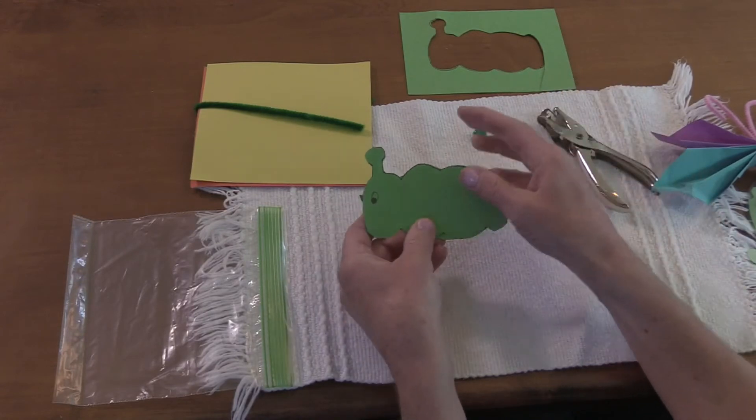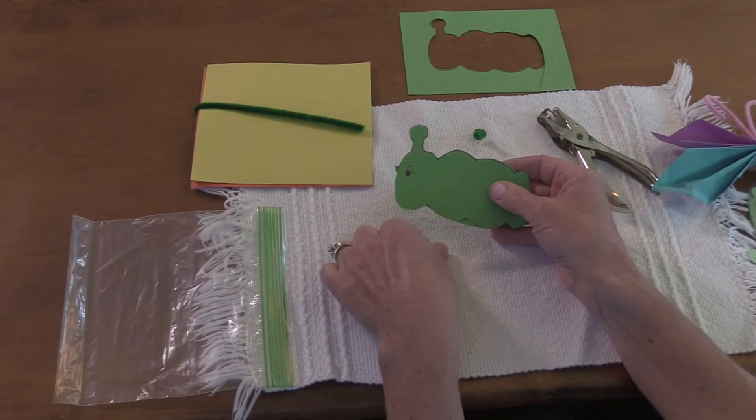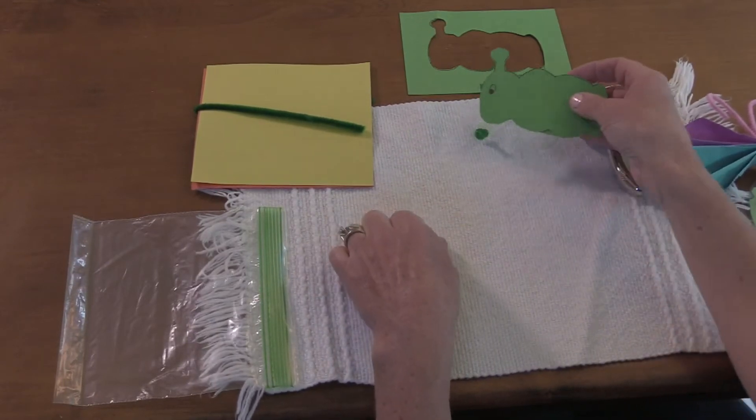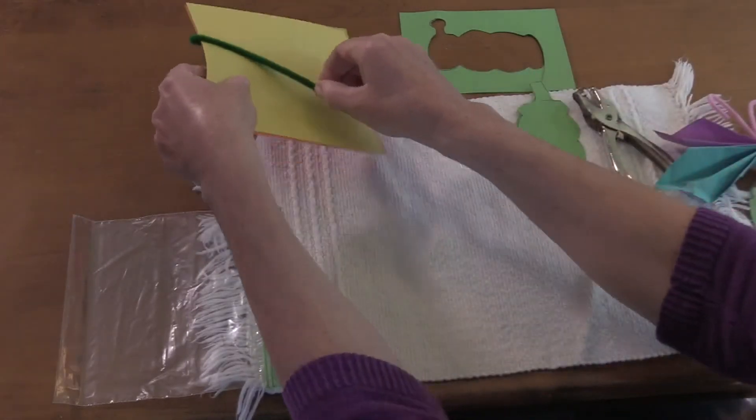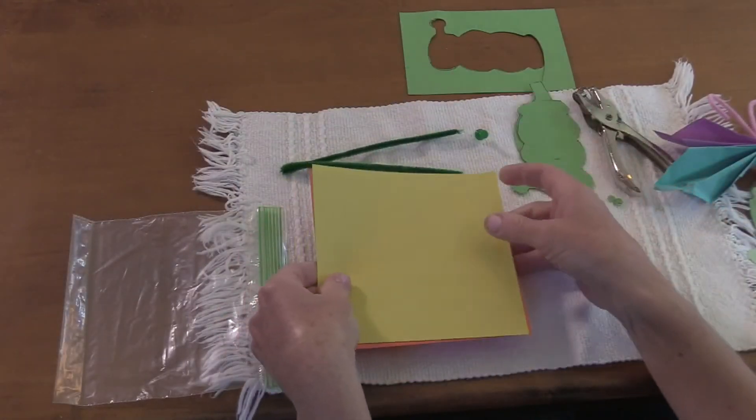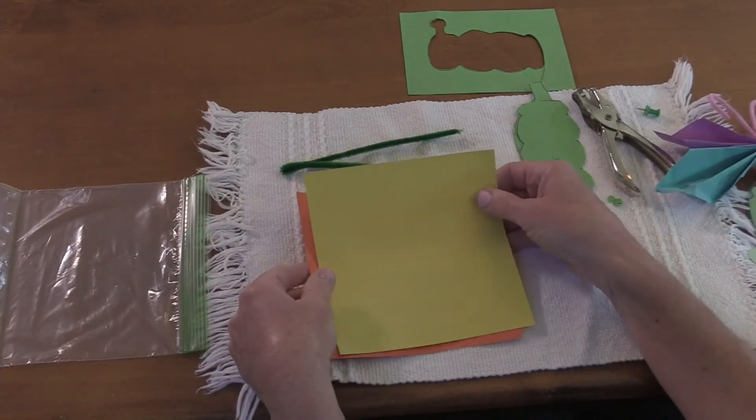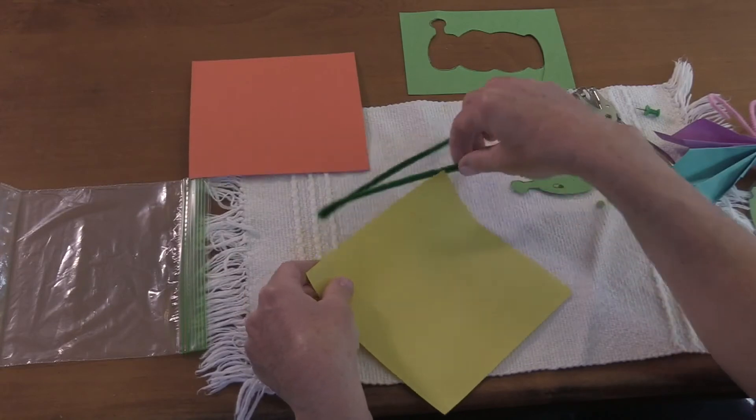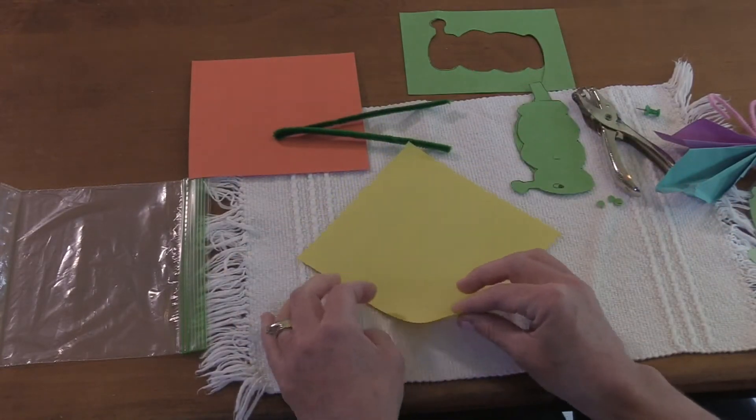Now we're going to make our butterfly. This butterfly is made by folding the paper and the technique is called origami. Origami is a Japanese word for paper folding.